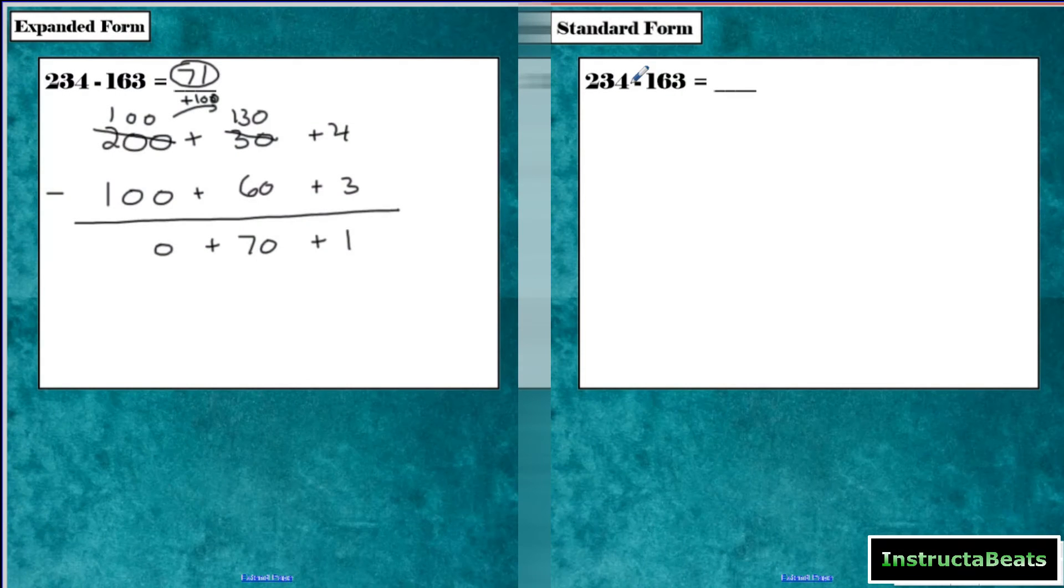Now we want to solve this using our standard algorithm, or some people call it the standard form of subtraction. And so what we're going to do is we're going to still line up our place values, except we don't have to write it in expanded form. So I'm going to write nice and big. I'm going to make sure that my ones place are lined up, my tens place are lined up, and my hundreds place are lined up. When we do this, we are still following the same steps. We're still starting with our ones place, and we're still going right to left.